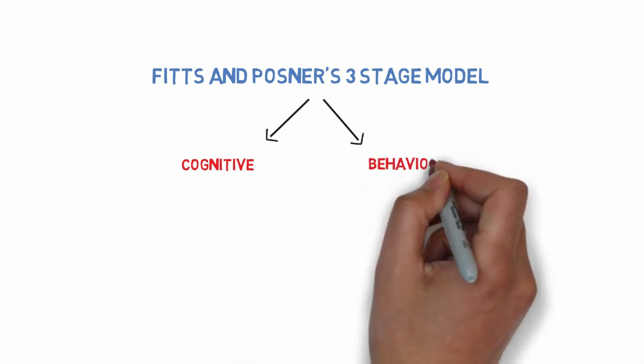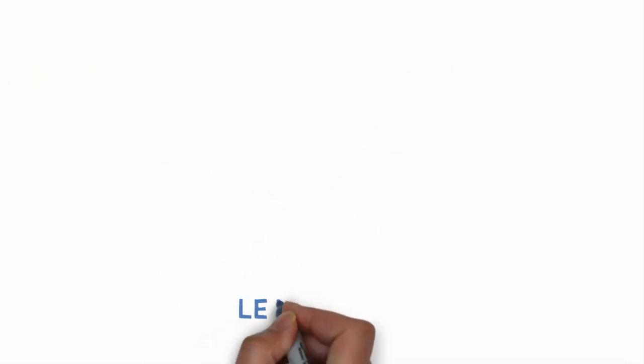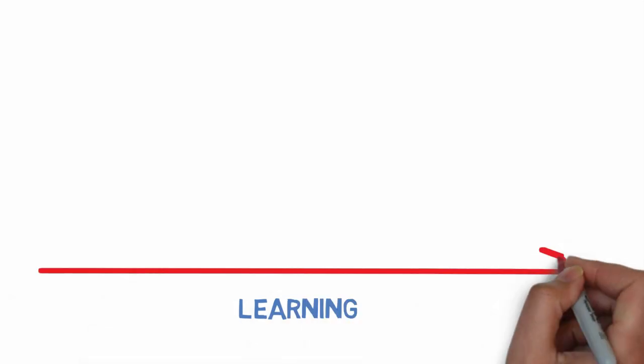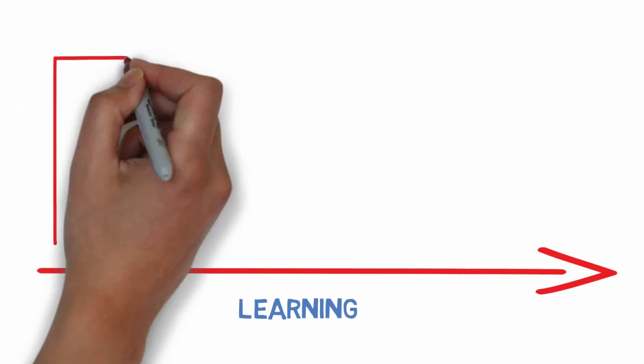It is proposed that as movements are learned, individuals gradually progress through three stages which comprise of a cognitive stage, an associative stage and an autonomous stage.